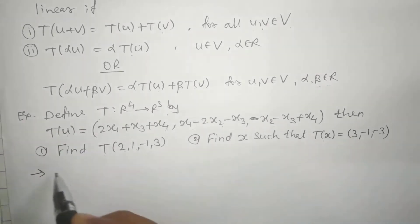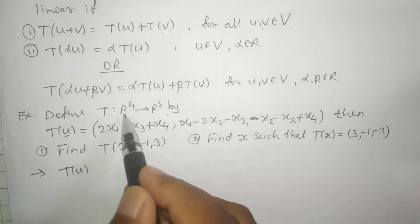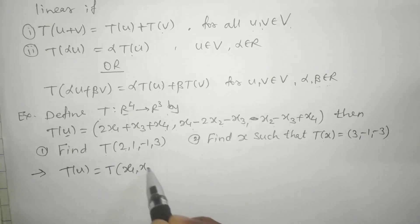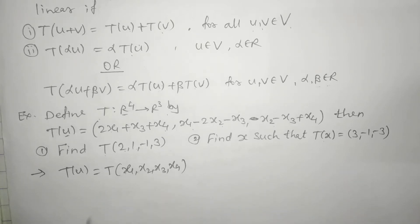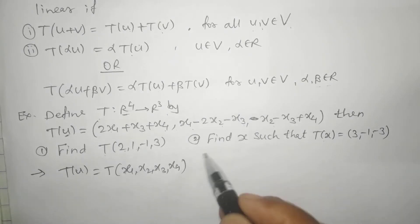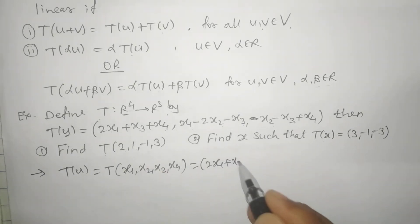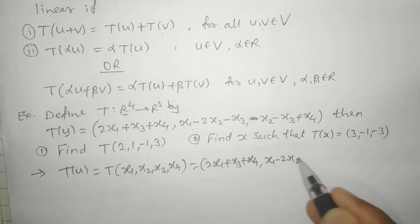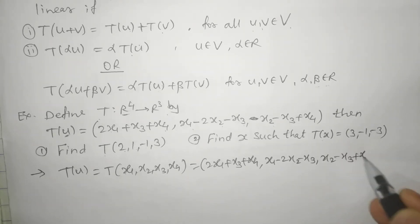First of all, find T of (2, 1, -1, 3). We have given the map T of U where U is from R raised to 4. So I can also write T of (x1, x2, x3, x4) from R raised to 4, since there are four elements. This equals 2x1 plus x3 plus x4 comma x1 minus 2x2 minus x3 comma x2 minus x3 plus x4.